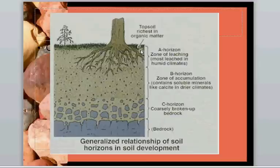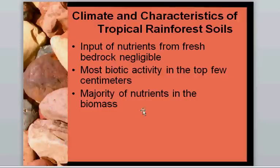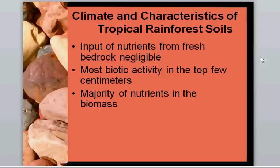Some key characteristics of tropical rainforest soils: inputs of nutrients from fresh bedrock are very negligible. Most biotic activity occurs in the top few centimetres, and the majority of nutrients in a tropical rainforest are in the biomass. Compared to a temperate ecosystem which gets a lot of fresh nutrient input, tropical rainforests have a deep weathering profile meaning the weathering front is at quite a large depth — fresh release of nutrients from bedrock occurs a long way from the rooting zone of plants.